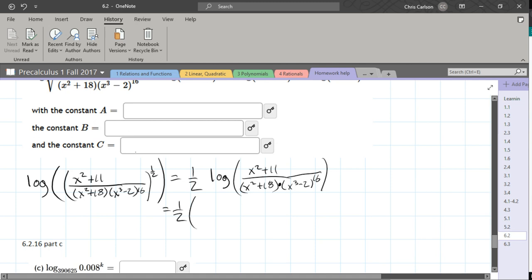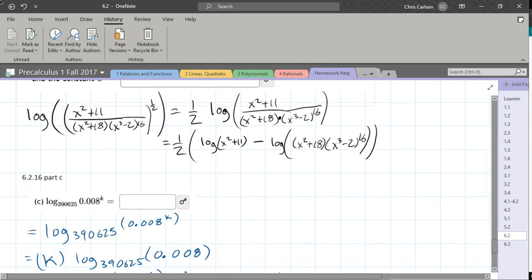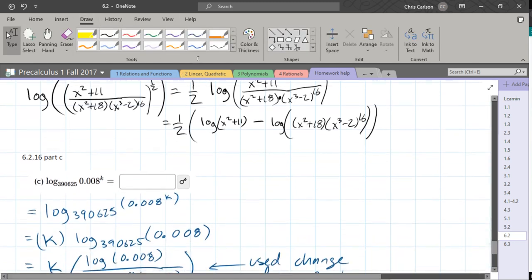So we can write this as 1 half times log of x squared plus 11 minus log of x squared plus 18 times x cubed minus 2 to the 16th. Okay, so we're getting there slowly. Let's make some more room here.